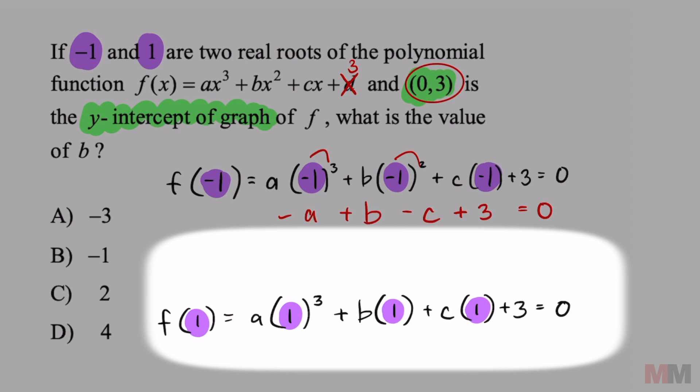The bottom one, simplifying that, I'll get a positive a, positive b once again, and a positive c plus 3 equals 0.